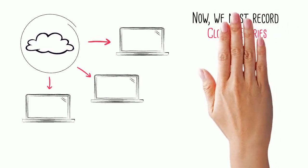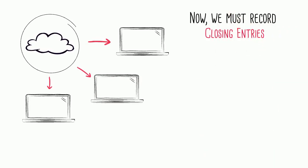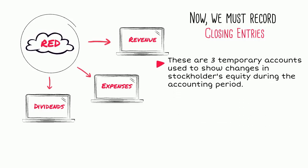Closing entries are a necessary part of the accounting cycle. The closing entries involve three temporary accounts: revenue, expenses, and dividends. Just think red. These accounts are used to show changes in stockholders' equity during the accounting period.